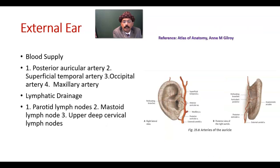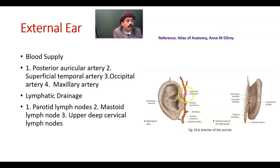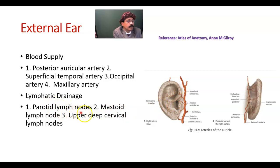Blood supply comes from branches of the external carotid artery, like the superficial temporal artery, the posterior auricular artery, and even contributions from the occipital artery. Some branches from the maxillary artery may also contribute. Lymphatic drainage goes to the parotid lymph nodes, mastoid lymph nodes, and upper deep cervical lymph nodes.